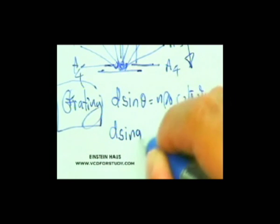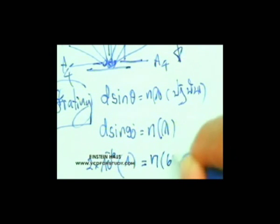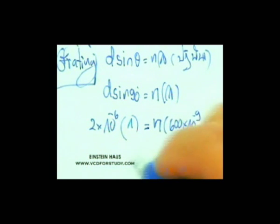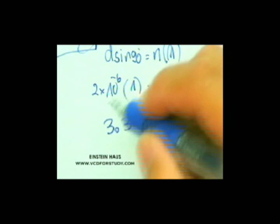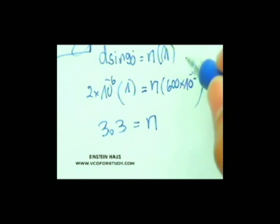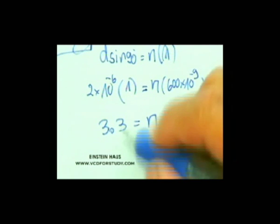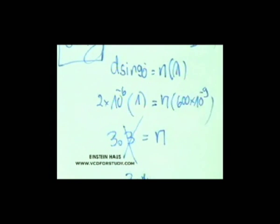Grating ก็ใช้สูตรเดียวกันกับ double slit คือ D sin θ = N Lambda นะครับ แทนค่า D = 2 x 10 ลบ 6, sin 90 = 1, N ไม่รู้, Lambda = 600 x 10 ลบ 9 เมตร คำนวณออกมาได้ N ประมาณ 3.3 ซึ่งปัดลงเป็น 3 นะครับ เพราะฉะนั้นไปถึง A3